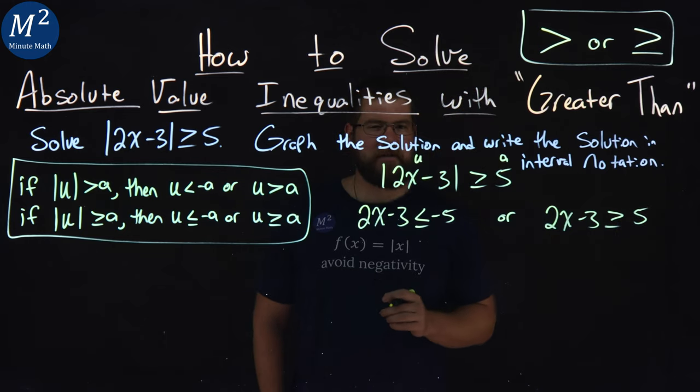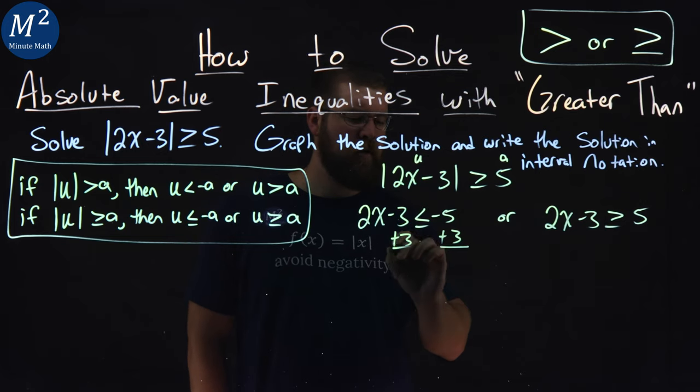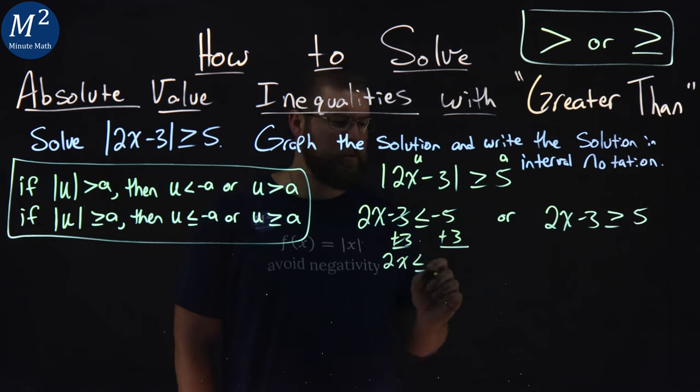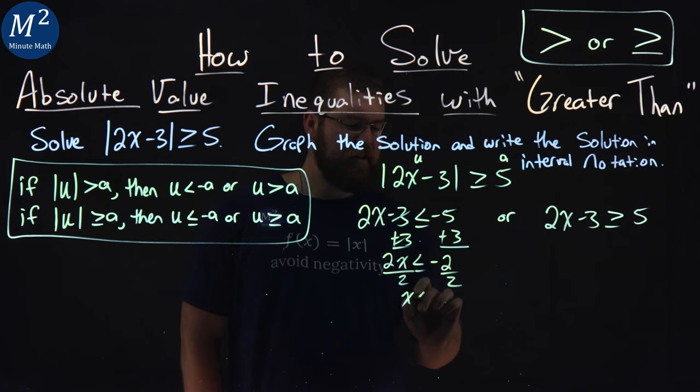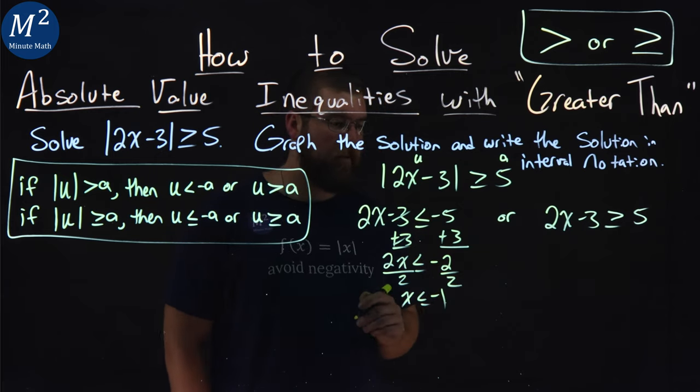Now from here we want to solve each part individually. I'm going to add 3 to both sides in the first one. The 3s cancel. 2x is less than or equal to negative 5 plus 3, which is negative 2. Divide both sides by 2, and x is less than or equal to negative 2 over 2, which is negative 1. We got the first part here.